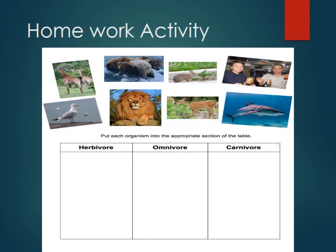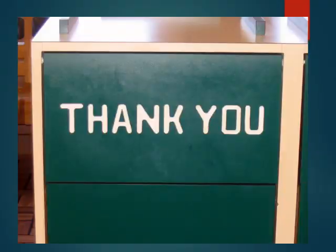Homework activity: Put each organism into the appropriate section of the table. There are three columns — herbivores, omnivores, and carnivores. You have to write the names in the appropriate section. Have a good day, thank you.